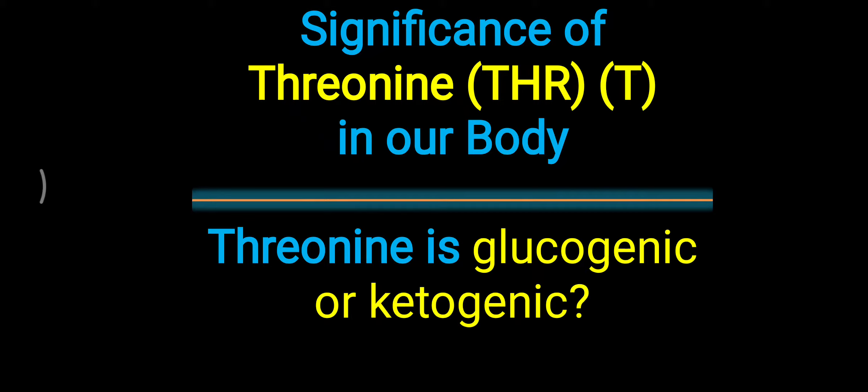One more question related to threonine — whether threonine is glucogenic or ketogenic — is also discussed in this video. First of all, threonine is one of the essential amino acids, meaning it is not synthesized in our body; we have to take threonine in our diet. If asked quickly, threonine is mostly a glucogenic amino acid, but one reaction also makes it ketogenic, which we will discuss.